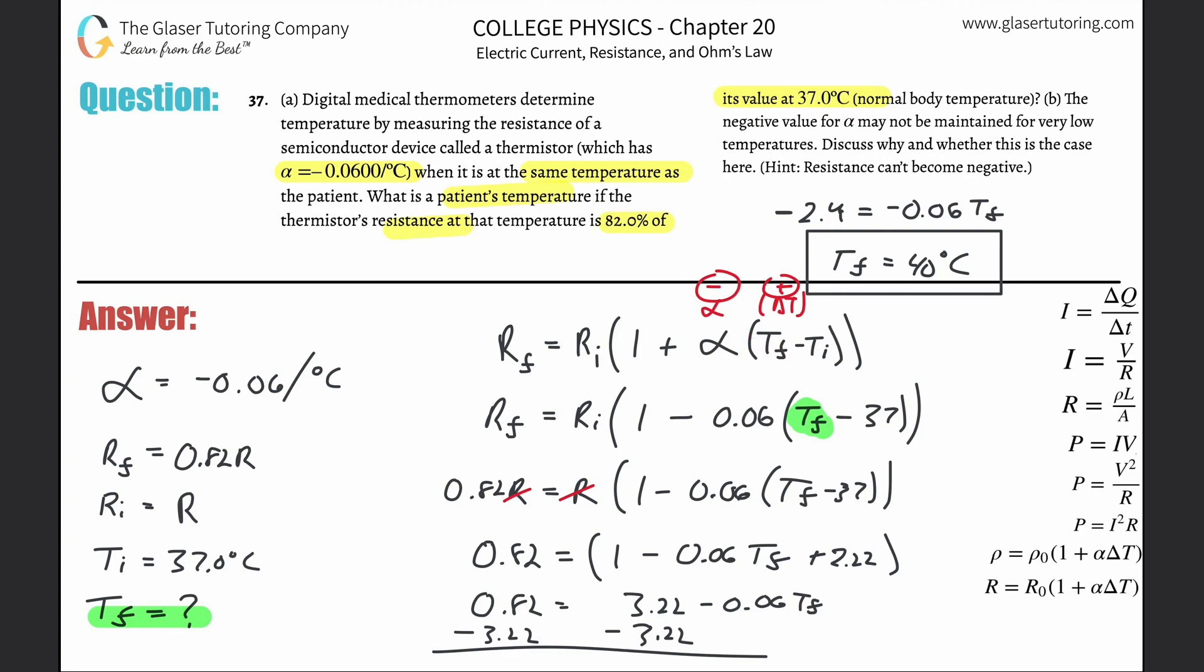Therefore, the final resistance will be a fraction or a smaller percentage of the initial. What was the temperature change like in this problem? The temperature change did exactly that. Look, we found the final temperature was 40 degrees Celsius, the initial was 37. So the temperature increased from 37 to 40. We know that since we had a negative alpha, the resistance therefore should actually go down, which it did. It told us it was 82 percent of the original. So it should make sense now.